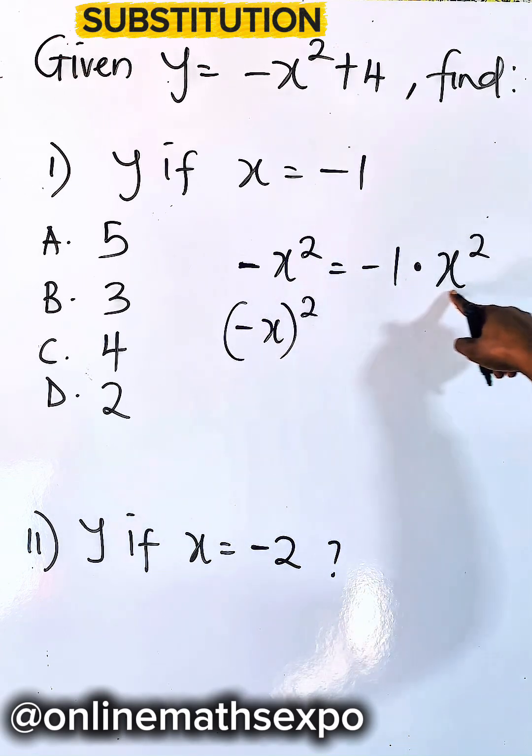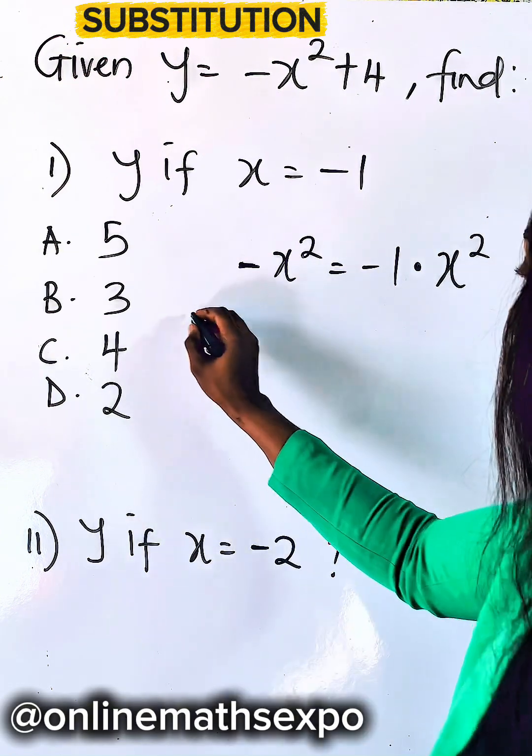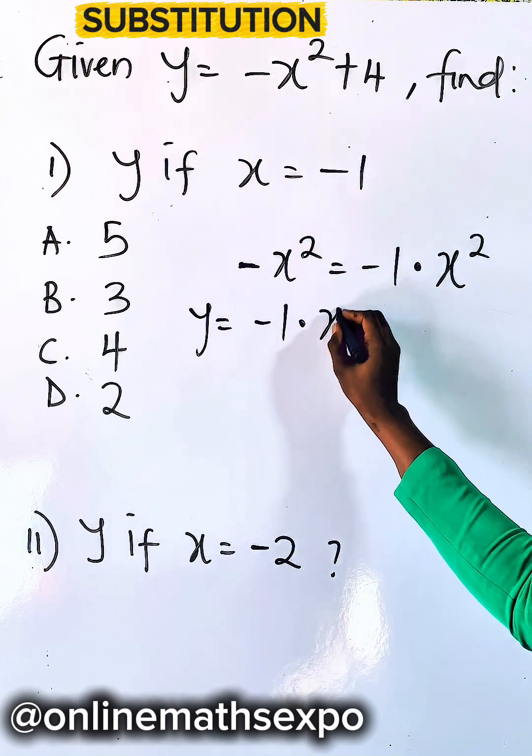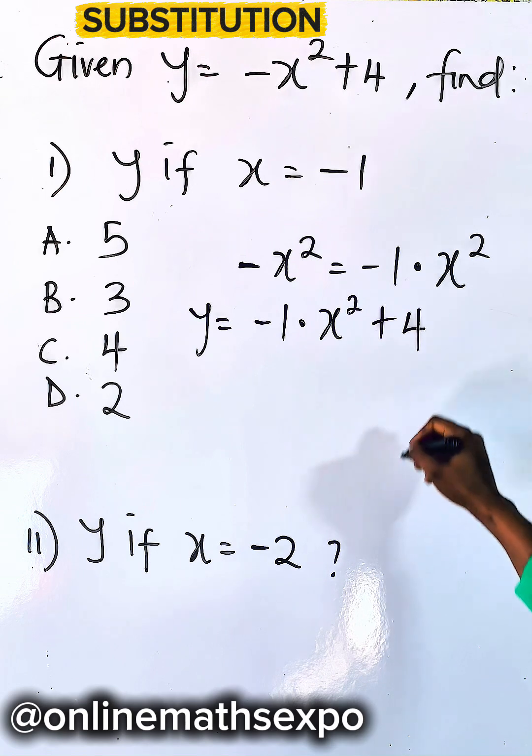So because this is what we have, let's go by that. To answer this, we are going to have y = -1 · x² + 4.